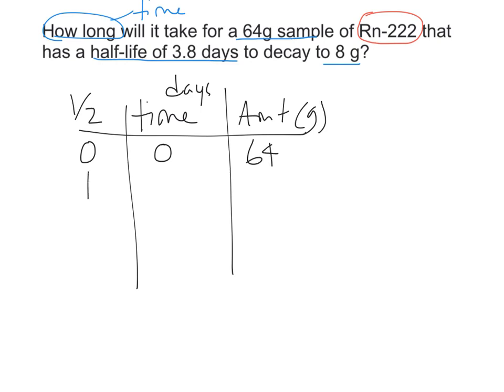We know that one half-life is 3.8 days. By definition half-life means that half of the product decays, so half of sixty-four is thirty-two. For my second half-life I'm going to add 3.8, so that will be 7.6. Half of thirty-two is sixteen.